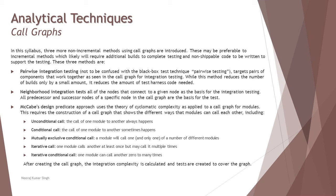Additionally, this requires the construction of a call graph that shows the different ways that modules can call each other. Including unconditional call, that is the call of one module to another always happens. Conditional call, the call of one module to another sometimes happens depending on the condition if it is met. Mutually exclusive conditional call, a module will call one and only one of a number of different modules at any point of time. Iterative call, one module calls another at least once but may call it multiple times. And iterative conditional calls, that is one module can call another zero to many times again.